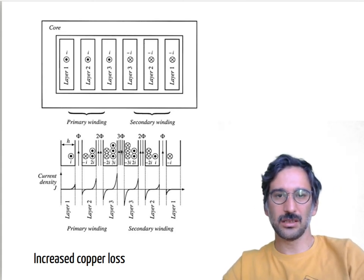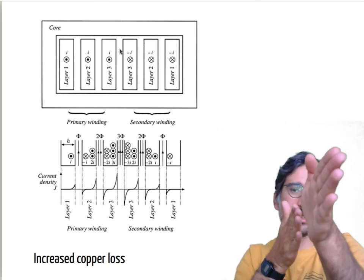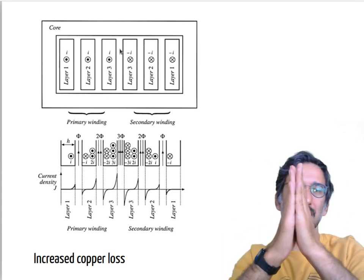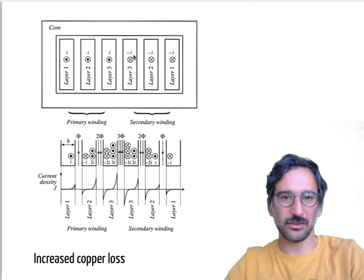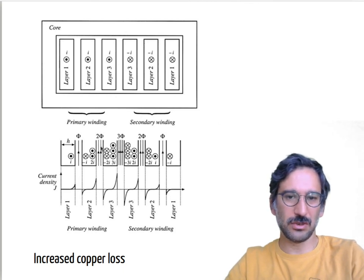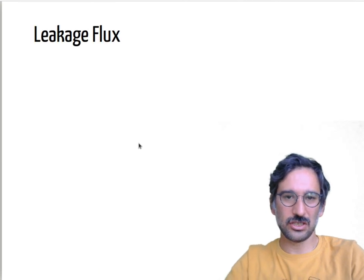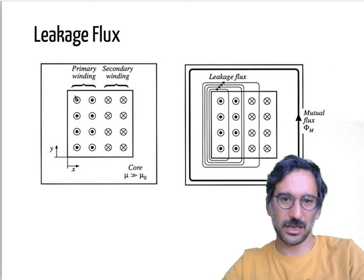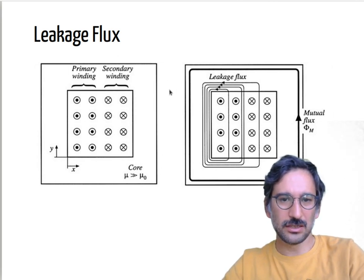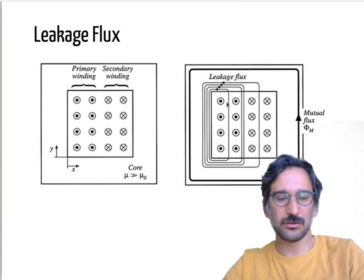If two conductors are close together carrying current in opposite directions, the current density concentrates at the surfaces facing each other, creating a non-uniform distribution. There is also leakage flux: some flux from the primary winding doesn't travel through the core but through the air between the primary and secondary windings. The MMF distribution across the winding layers is important to understand when deciding how to arrange your windings.